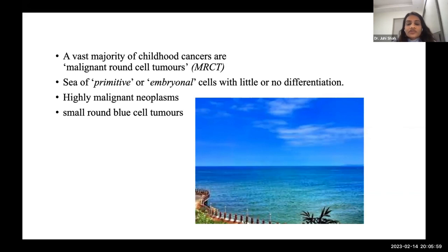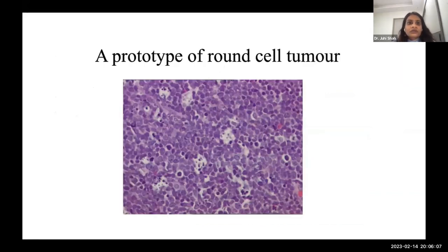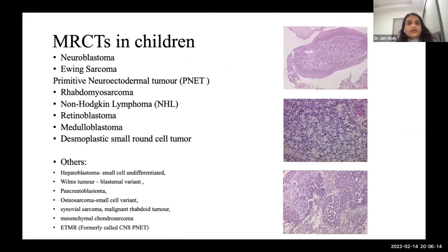On microscopy, these look like a sea of blue cells — a prototype of round cell tumors. The most common malignant round cell tumors in children include neuroblastoma, Ewing sarcoma (now referred to as primitive neuroectodermal tumor or PNET), rhabdomyosarcoma, non-Hodgkin's lymphoma, retinoblastoma, medulloblastoma, and desmoplastic round cell tumors.